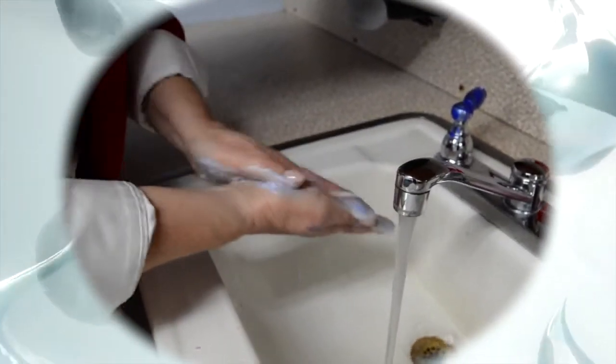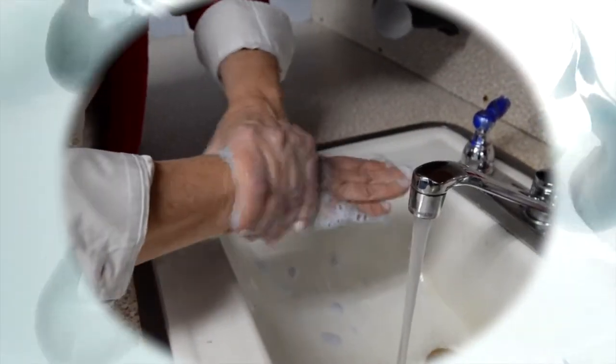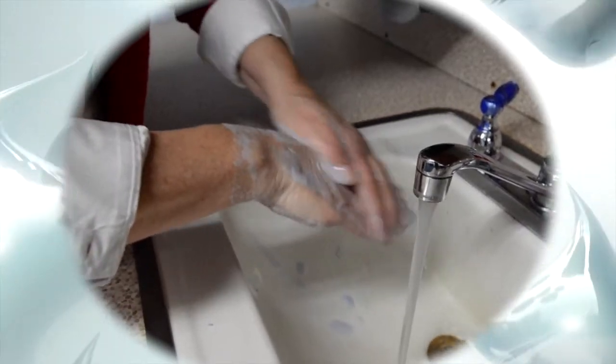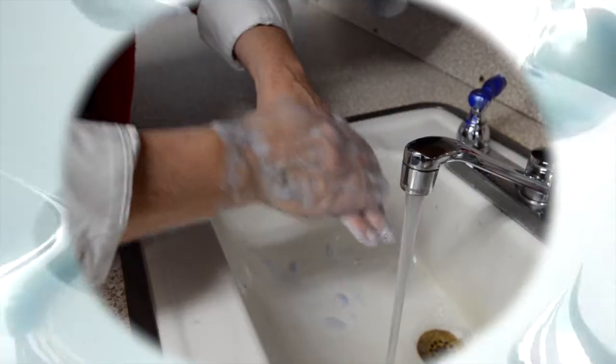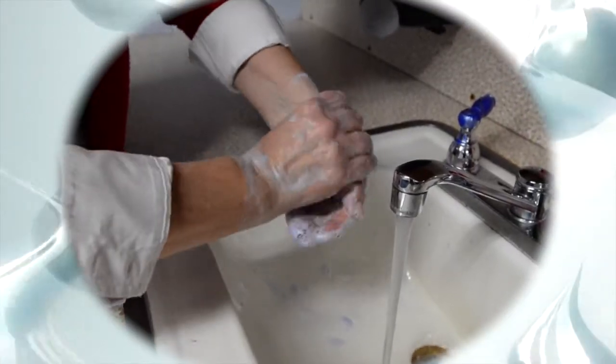So we're going to get the soap on our hands, and we're going to keep our hands out of the water, and we're going to wash them. We will wash the fronts of our hands, our wrists, the back of our hand, the other back of our hand, the other wrist, and then the fronts.